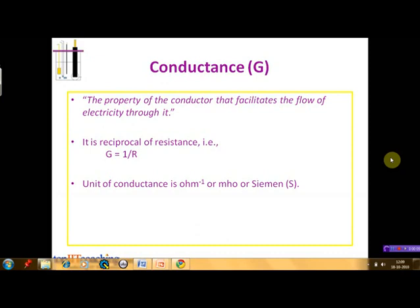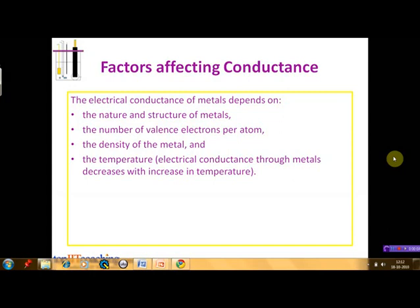Conductance. The property of the conductor that facilitates the flow of electricity through it is known as conductance of the conductor. It is denoted by G and is reciprocal of resistance. Therefore, we can write that G is equal to 1 by R. The unit of conductance is Ohm inverse, or Mho, or Siemen, which is denoted by capital S. The electrical conductance of metals is due to the movement of electrons. Factors that affect it include the nature and structure of metals, the number of valence electrons per atom, the density of the metal, and the temperature. Electrical conductance decreases with increase in temperature in metals.